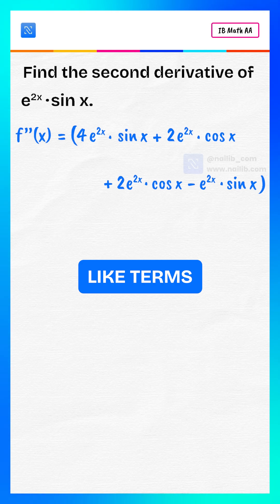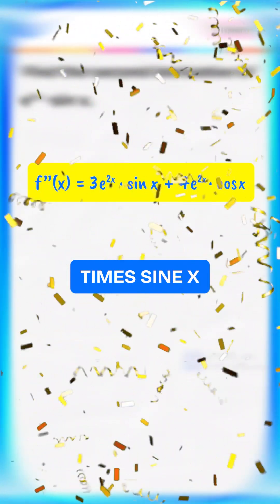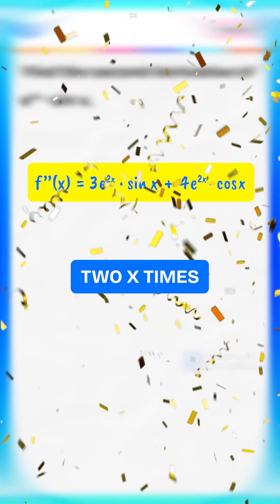Let's group like terms. So the second derivative is 3 times e to the power 2x times sine x plus 4 times e to the power 2x times cosine x.